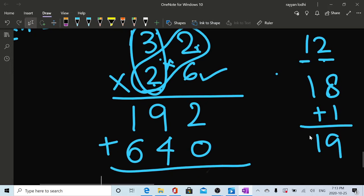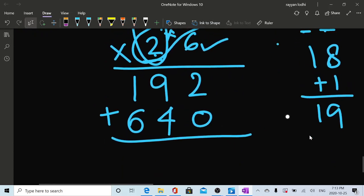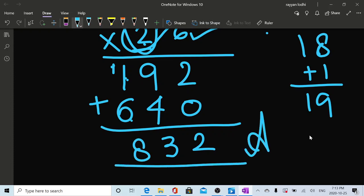Two plus zero is two. Sorry. Nine plus four is 13. Six plus one is seven. Plus one is eight. 832. Done. Your answer. So this was the two digit by two digit. You can always go back on the video if you want to just see and repeat and review.